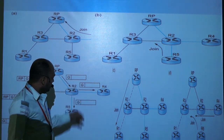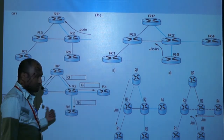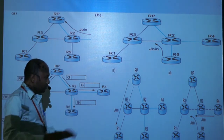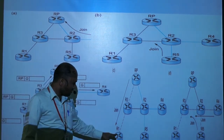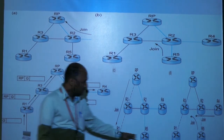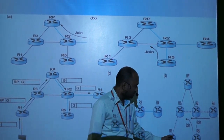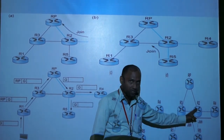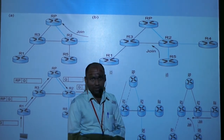Since there is a large distance between the sender and the receiver, and the distance is more, RP sends a message to R4 to find the shortest path distance. R1 broadcasts to find the shortest path, and R4 and R5 find the shortest path distance. Thank you all.